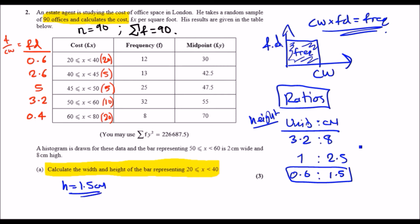As for the width now, let me change to red. We do the same thing for width. So we've got units to centimeters. So according to the 50 to 60, the width is the class width. So for every 10 units, this represents, according to the data, 2 centimeters.